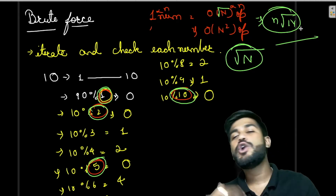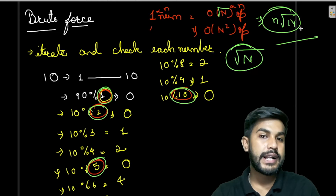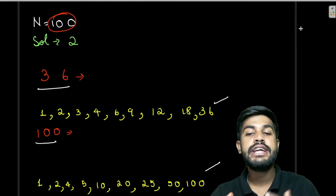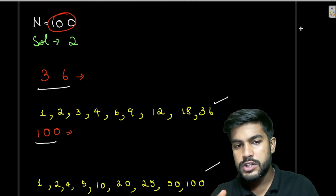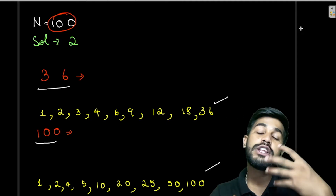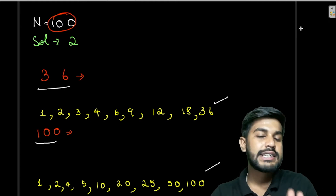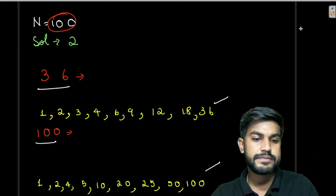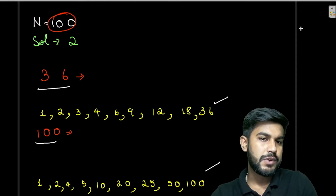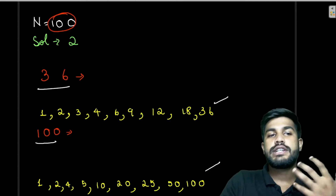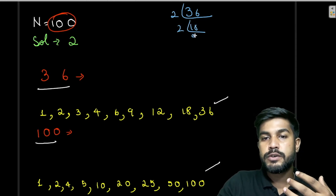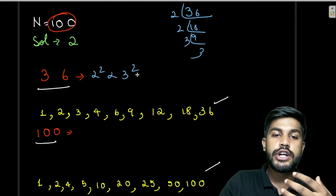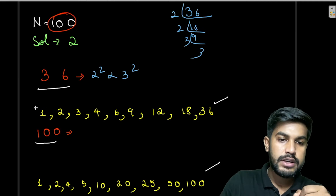Can we do even better? Yes. Let's look at the sample test case and make observations. Let's do the prime factorization of 36. We get 36 = 2² × 3². Now, 1 and 36 itself would always be divisors. Then we have 2 (= 2¹), 3 (= 3¹), 4 (= 2²), 6 (= 2¹×3¹), 9 (= 3²), 12 (= 2²×3¹), and 18 (= 2¹×3²).